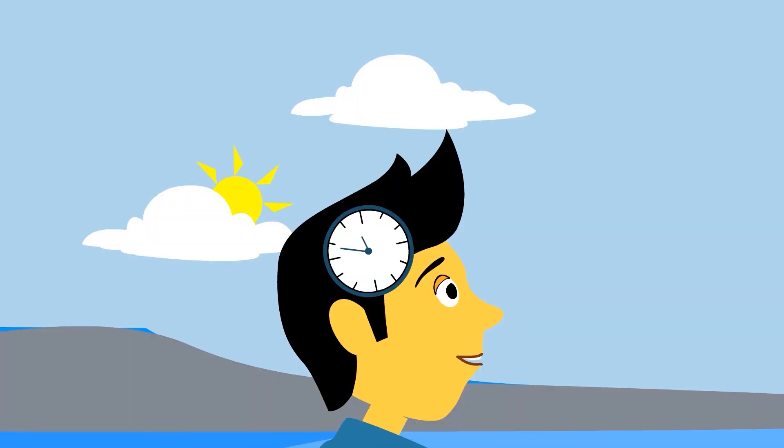Our body clock gets its cues from the position of the Sun in the sky. Our social clock, which is the time it says on our watch, has no effect on our body clock.